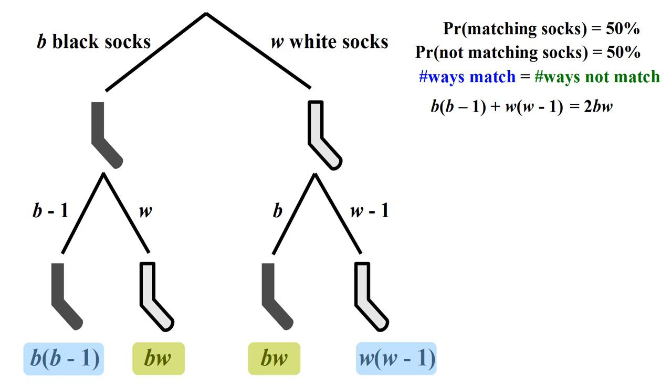We can now simplify this equation and we end up with B minus W, the quantity, squared, is equal to B plus W. Now we need to deduce some things from what we know about the total number of socks. This equation tells us that the total number of socks B plus W is a perfect square. We know this because B plus W is equal to the quantity B minus W squared.